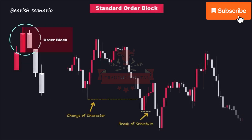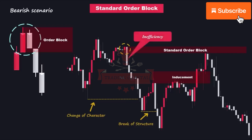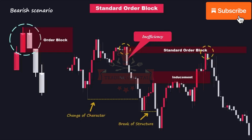In this example, we see that after the formation of the last bullish candle, the price experienced a sharp downward movement, leaving behind a significant inefficiency in the market. However, the price eventually retraced back up, filling the liquidity voids that were created during the downward move. As a result, the order block in question was mitigated, indicating that the market participants have successfully filled their buy orders. Subsequently, the price reversed once again and continued its downward movement.